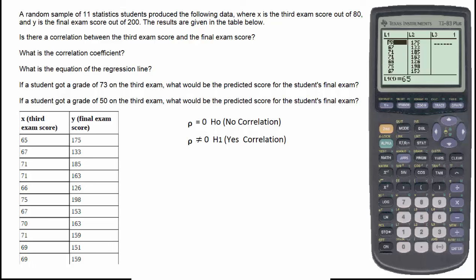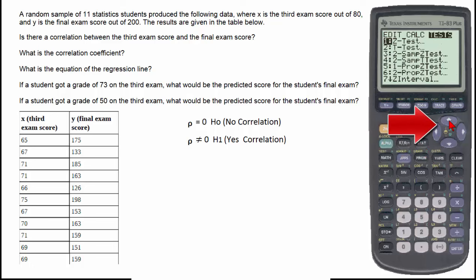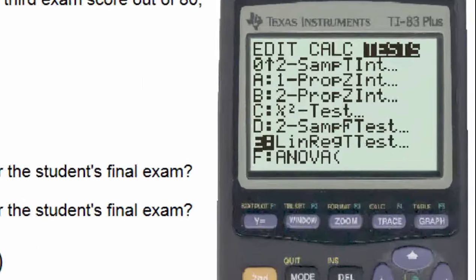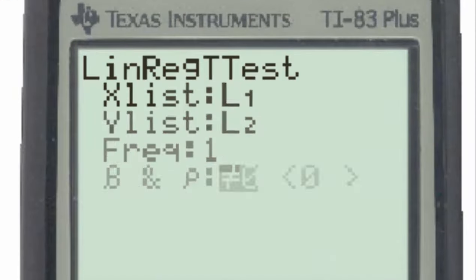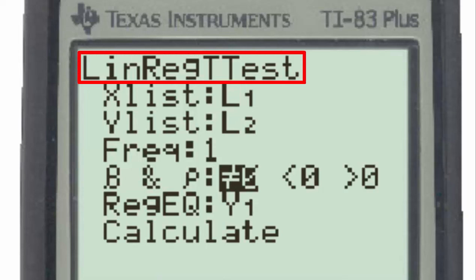Now with the data in List1 and List2, we can go to the Stat button, Test menu, and use the Up button twice to go to the Linear Regression T-Test, which is letter E. Press Enter, and we have the Linear Regression T-Test.